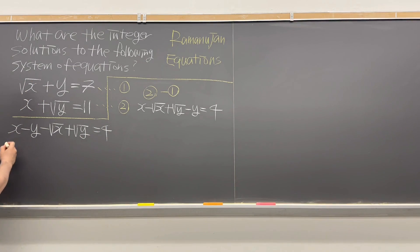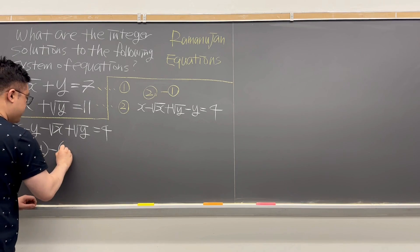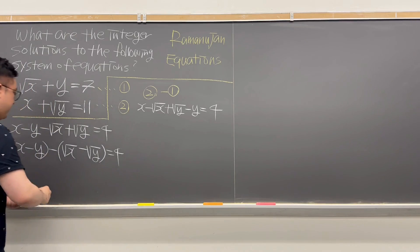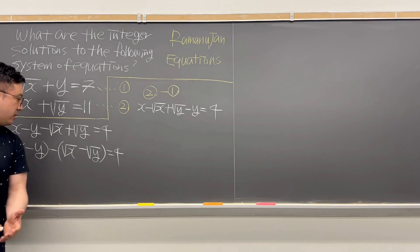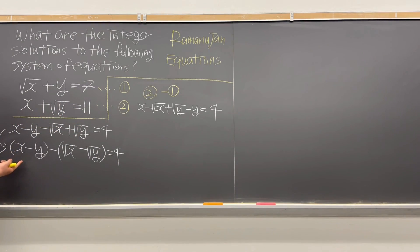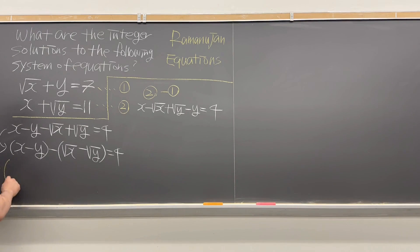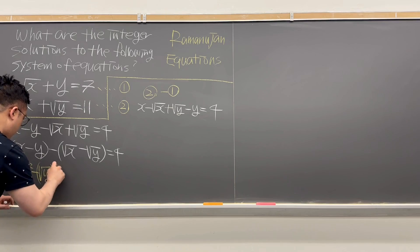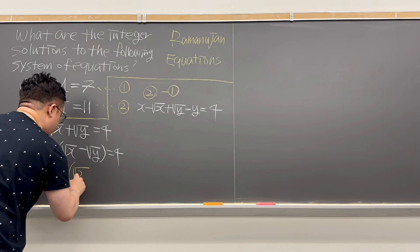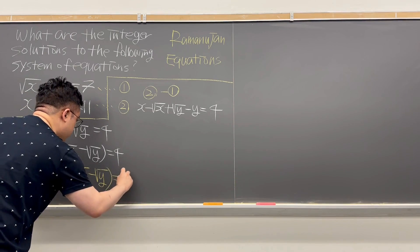Making a parenthesis, we have (x − y) minus (√x − √y) = 4. Now, since we have square roots, I'll rewrite x as (√x)² and y as (√y)². So we can rewrite this as (√x)² minus (√y)², then minus (√x − √y), which is equal to 4.